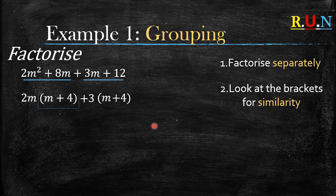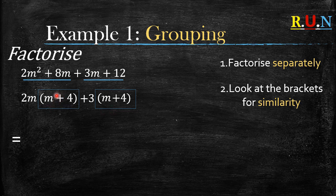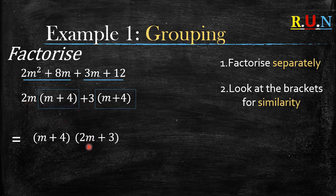Step two: look at the brackets for similarity. When you factorize these two pairs separately, these two brackets should be the same — once they are similar you're on the right track. From here we take (m + 4) and write it as one bracket, then we take the outside factors (2m + 3) and put them in another bracket. That's our final answer.